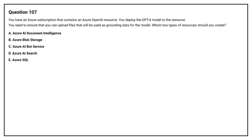Option A: Azure AI Document Intelligence. Option B: Azure Blob Storage. Option C: Azure AI Bot Service. Option D: Azure AI Search. Option E: Azure SQL. The correct answers are Option B: Azure Blob Storage, and Option D: Azure AI Search.